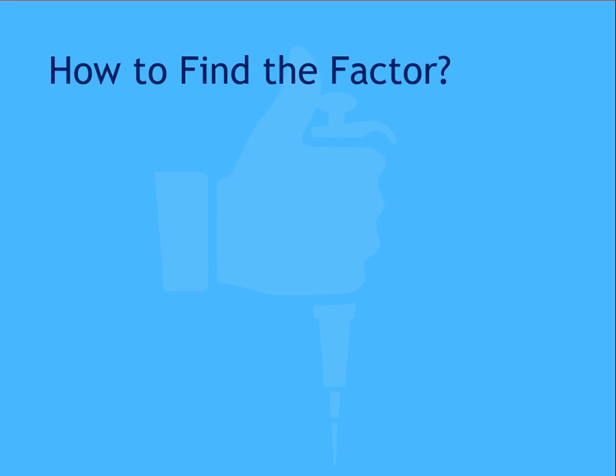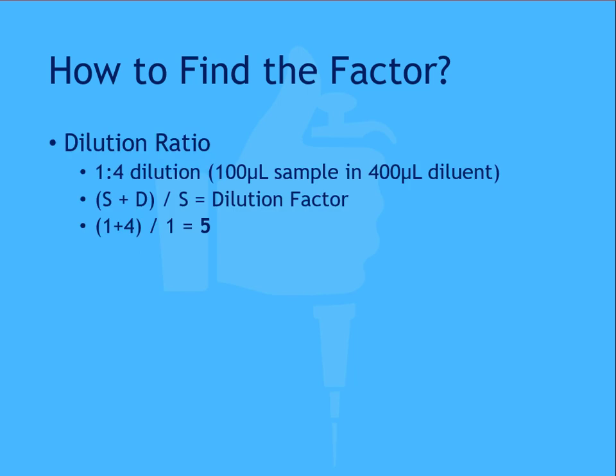Let's look at a couple of examples. So we need to identify the dilution factor, which will be used in subsequent calculations to return the final concentration. If the dilution ratio is used, and the protocol calls for a 1 to 4 dilution, we could dilute our sample 100 µl of sample into 400 µl of diluent, because remember, the first number in the ratio represents the part's sample, and the second represents the part's diluent. To calculate the dilution factor, we need to find the total parts divided by the part's sample. So S plus D, or 1 plus 4, divided by the part's sample, or 1, is 5 divided by 1, returning a dilution factor of 5.